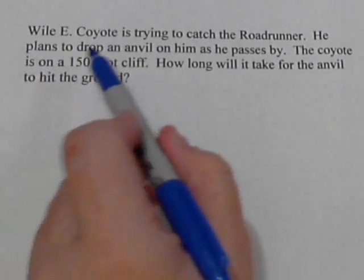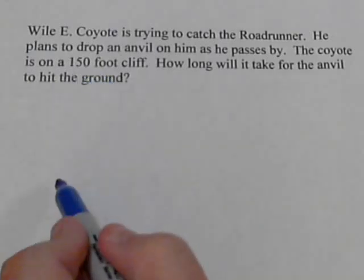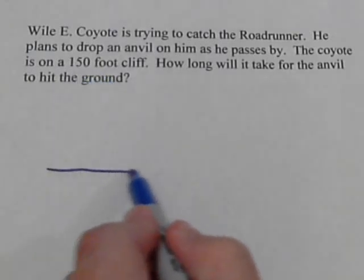We got Wile E. Coyote trying to catch the Roadrunner. All right, this time, he plans to drop an anvil on him as he passes by.